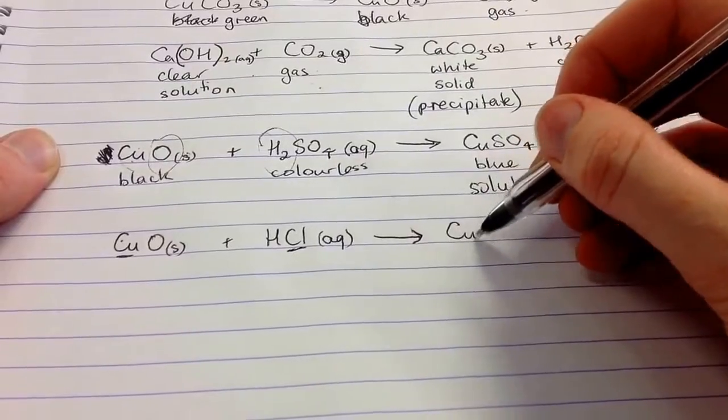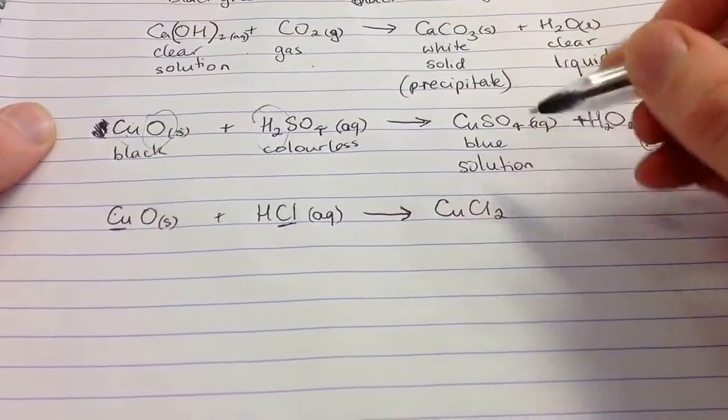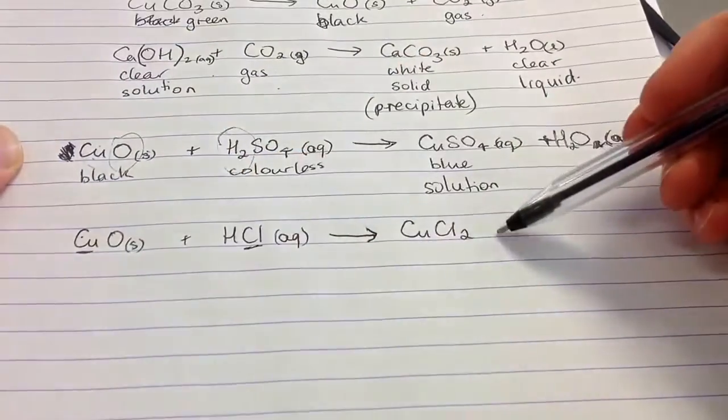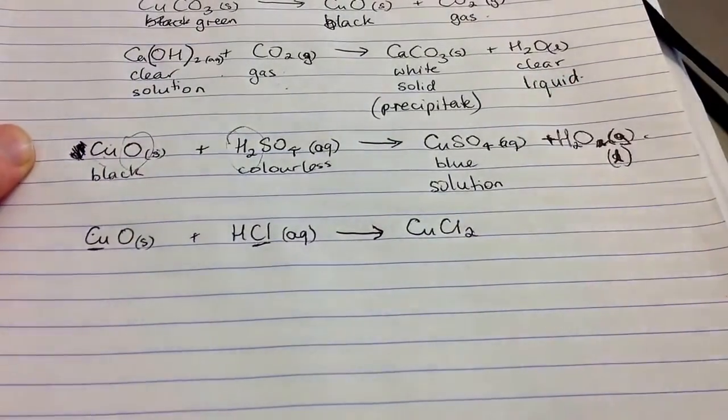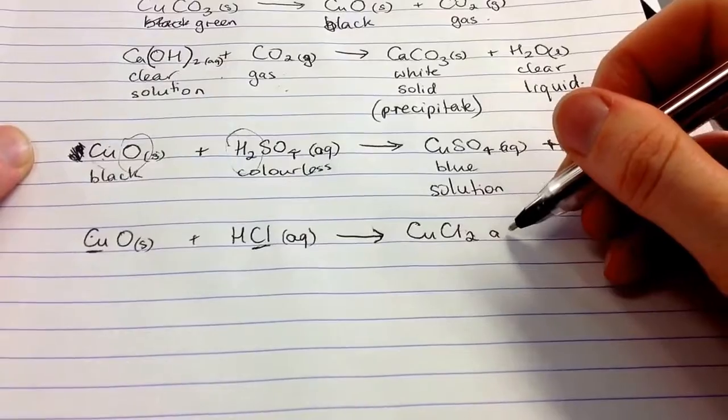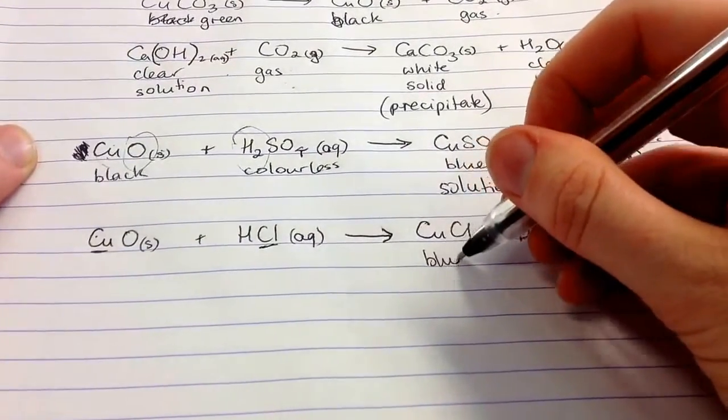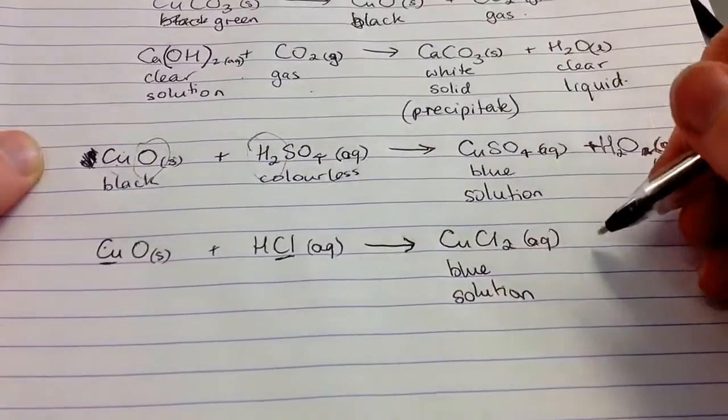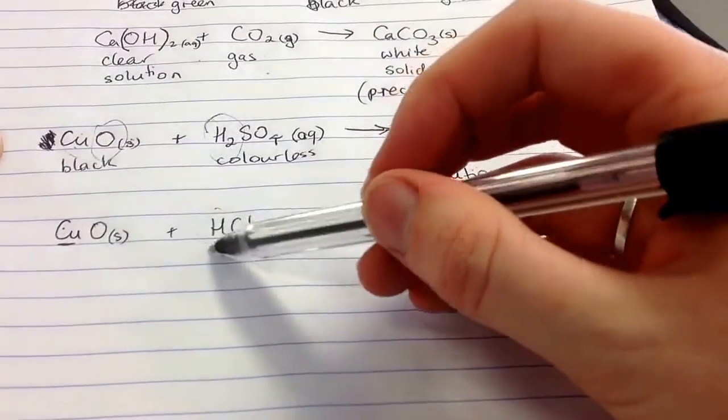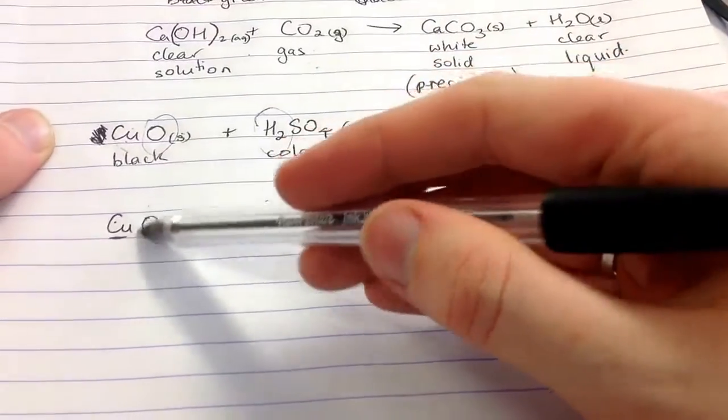And we formed copper chloride. This is copper two. So that means we need two chlorines to balance that positive two charge on copper. And this was another nice blue solution. And again, we make water because we have hydrogen and oxygen.